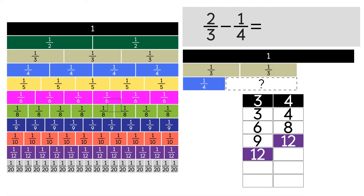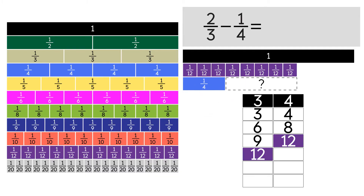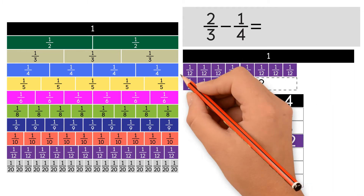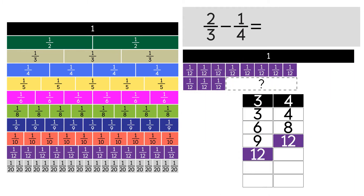4 strips of 1 twelfth fit into 1 third, so 2 thirds equals 8 twelfths. 3 strips of 1 twelfth fit into 1 fourth, so 1 fourth equals 3 twelfths. Now we can subtract. 8 twelfths minus 3 twelfths equals 5 twelfths.